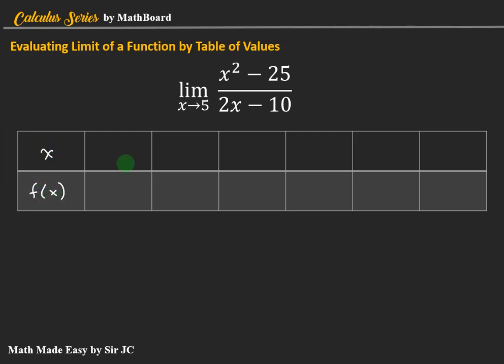The values that are very close to 5 from the left are 4.9, 4.99, and 4.999. And from the right, that is 5.001, 5.01, and 5.1.